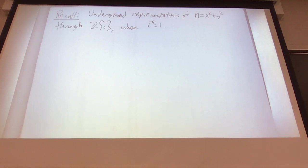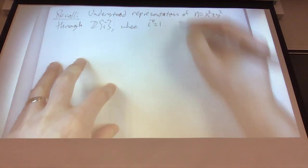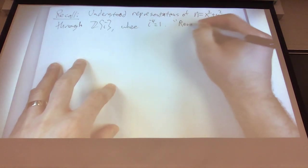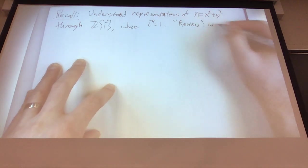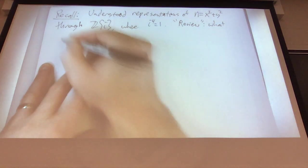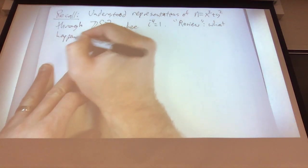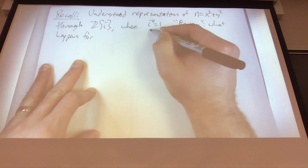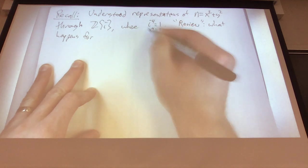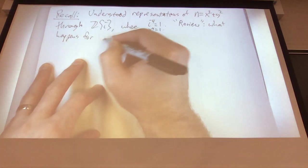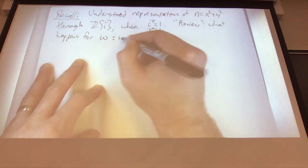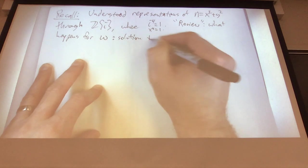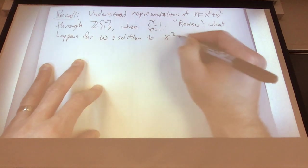As a review — and a slightly deeper re-understanding of what we did — what happens not for this equation, not x to the fourth equals one, which i solves, but for ω (omega), a solution to x cubed equals one?